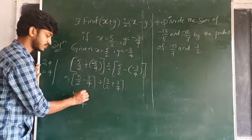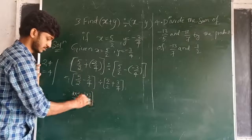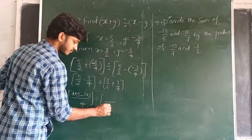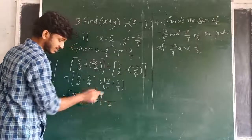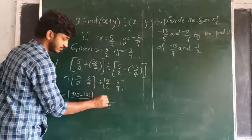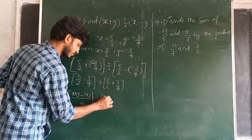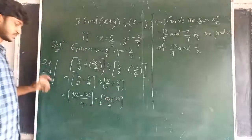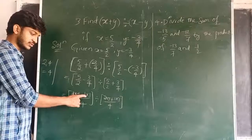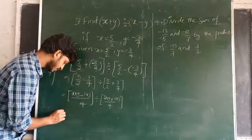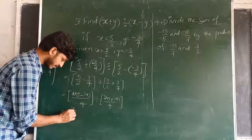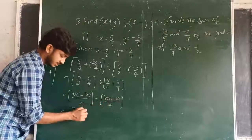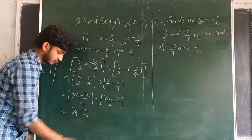So in the numerator: LCM is 4, giving 2 into 5 plus 1 into 3. That is 10 plus 3, which equals 13 — wait, 10 minus 3 equals 7. So numerator is 7 by 4. In the denominator: 2 into 5 plus 1 into 3 gives 10 plus 3 equals 13. So denominator is 13 by 4.